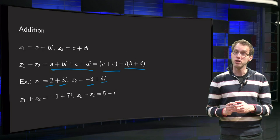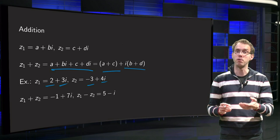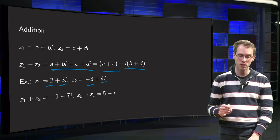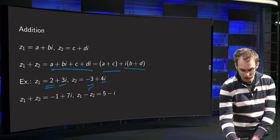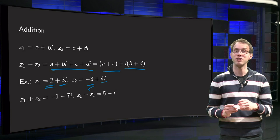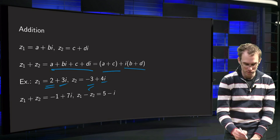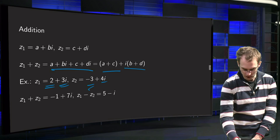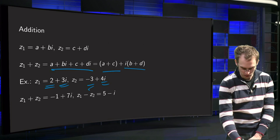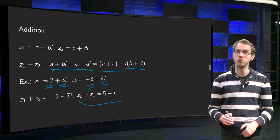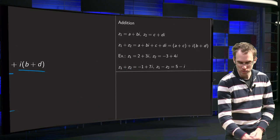Similarly we do the subtraction. We just subtract real parts and we subtract imaginary parts. So z1 - z2 equals 2 minus -3, so 2 + 3 equals 5. And 3i - 4i equals -i. So here you have z1 - z2. So no problem at all.